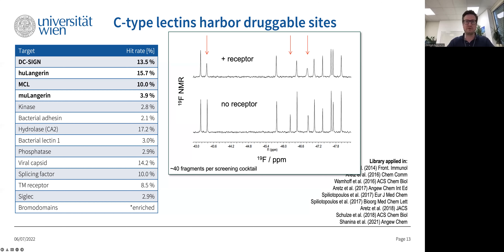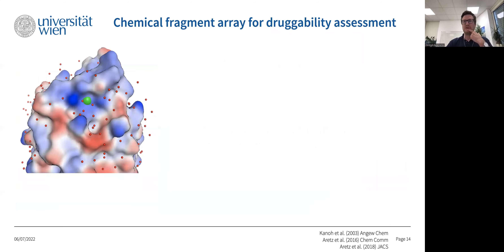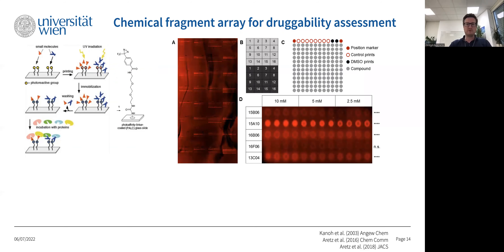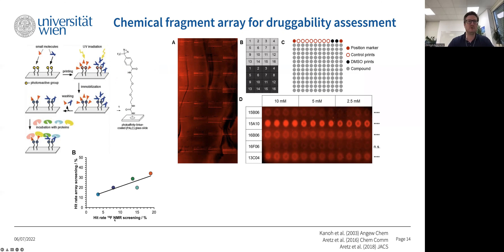We were very surprised to find that the proteins I told you were flat and hydrophilic are very amenable for small heterocycles to bind — hit rates up to 16%, compared to an average of around 5% in fragment-based design. To further confirm this high druggability, we also teamed up with Professor Osada at RIKEN, who had developed photo-affinity linker chemistry on glass slides using a diazirine that upon light activation inserts into your small molecule printed on the glass slide. We printed our entire fragment library on glass arrays and did microarray screening, finding that the results correlated nicely with fluorine NMR hit rates.